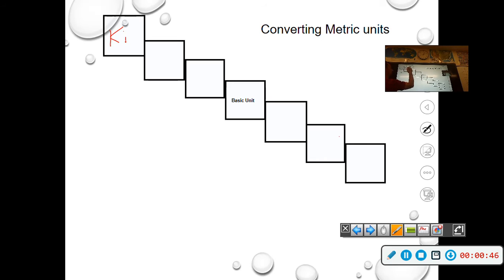The first one is going to be kilo, hecta or hecto, deca, and then basic unit. You're going to have gram, liter, and meter. They're all going to fall under basic unit, and then you go down the list. Then it's deci, centi, and then finally milli.